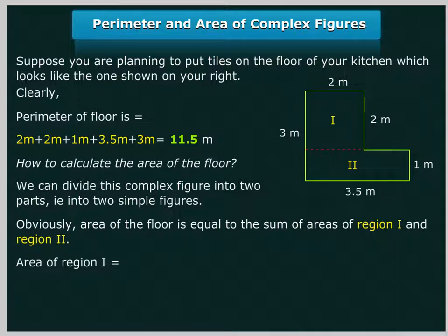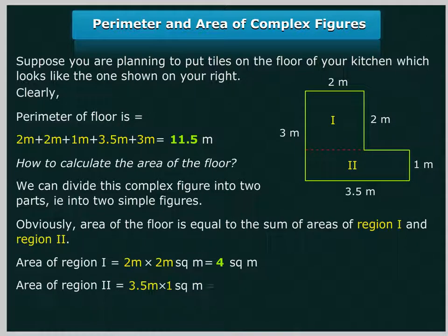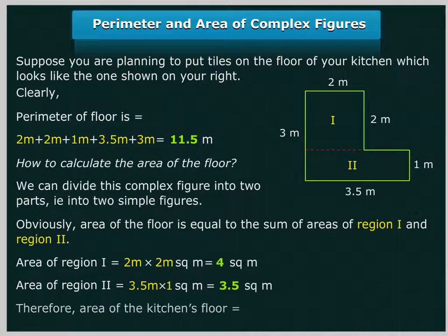Area of region 1 equal to 2 multiplied by 2 square meter equal to 4 square meter. Area of region 2 equal to 3.5 multiplied by 1 square meter equal to 3.5 square meter. Therefore, area of the kitchen's floor equal to 4 plus 3.5 square meter equal to 7.5 square meter.